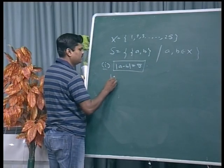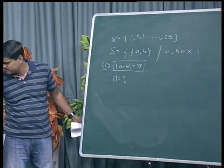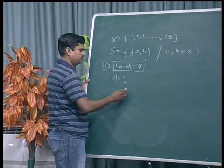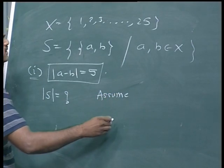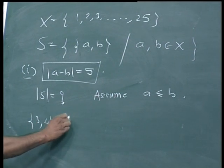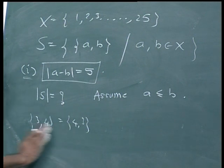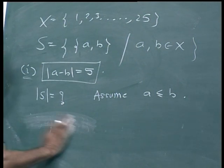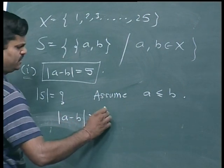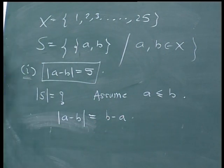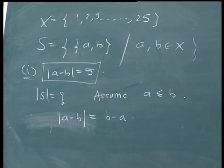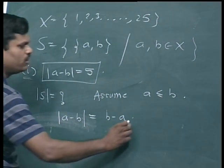Our aim is to find mod of S. As order is not important here, we assume without loss of generality that a is less than or equal to b. Whether you write (3, 4) or (4, 3) in a set, it is the same pair. If a ≤ b, then mod of a minus b equals b minus a, which we set equal to 5.